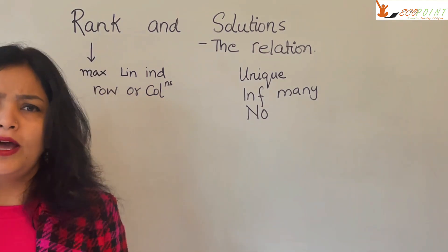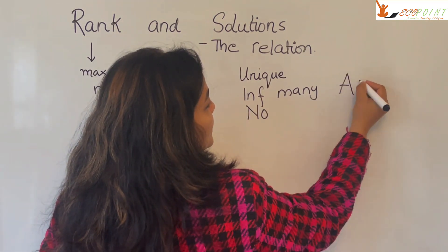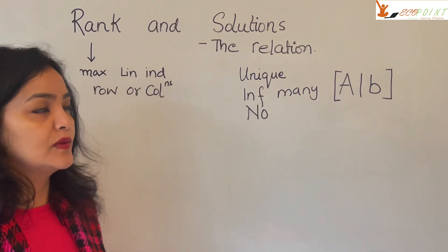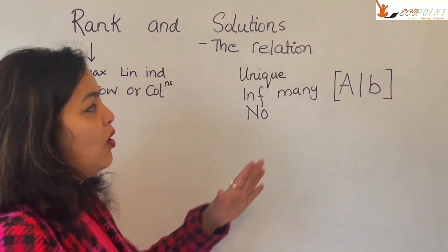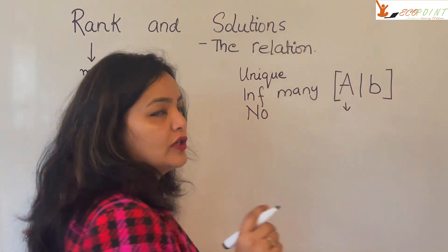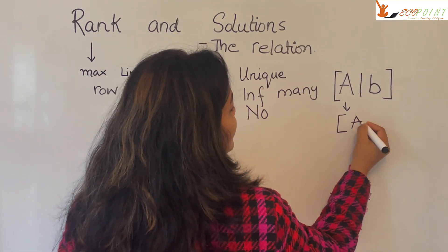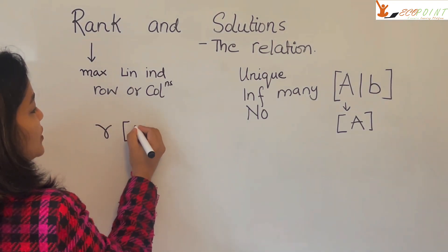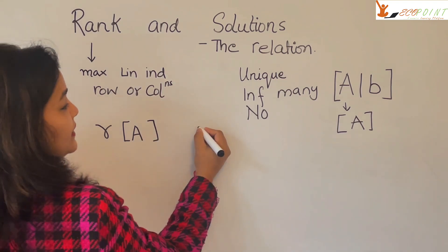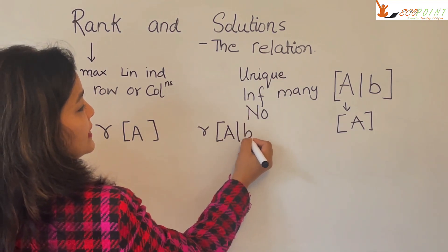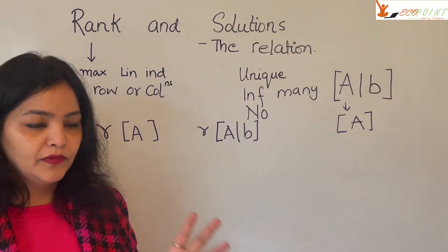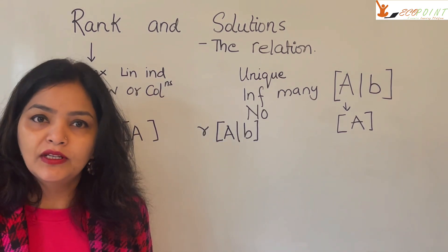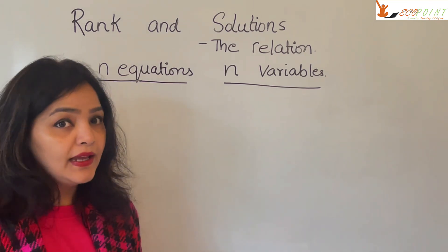Suppose you have a system of equations represented as augmented matrix [A|b] — the general depiction for any system of equations. The augmented matrix [A|b] consists of the coefficient matrix A. We will consider the coefficient matrix A separately and compare the ranks of A and the augmented matrix [A|b] in order to comment on the type of solution the system can have. Suppose we have n equations in n variables.